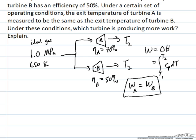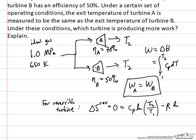Typically, the way we work turbine problems is that if we have a reversible turbine, then for that kind of turbine, delta S reversible is equal to 0, which is equal to Cp times the log of T2 over T1 minus R log P2 over P1.